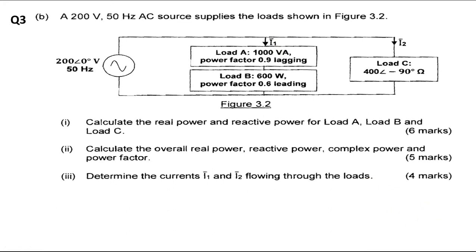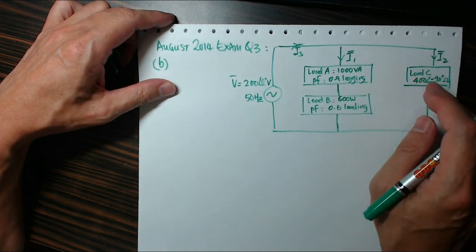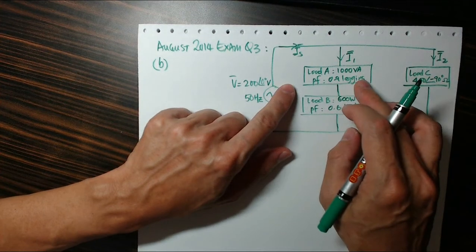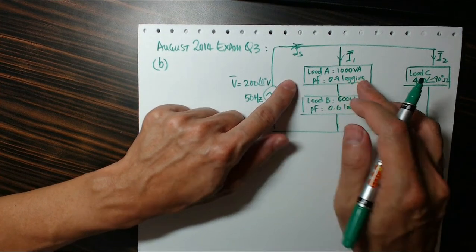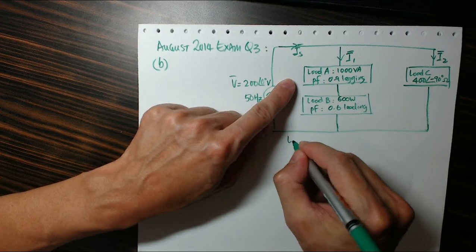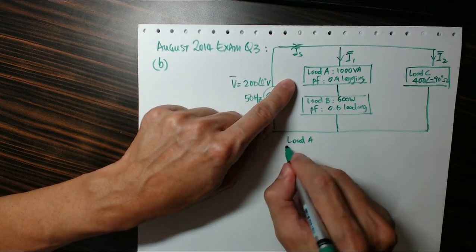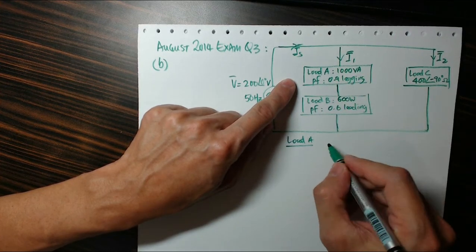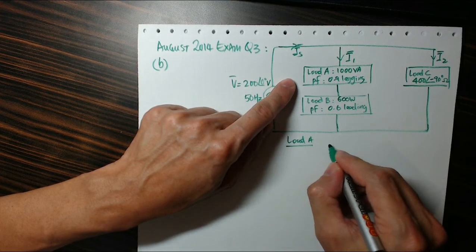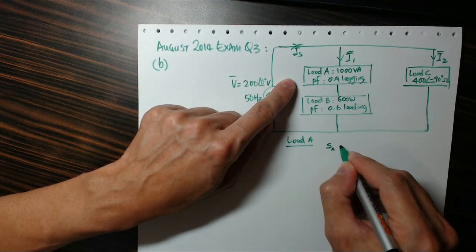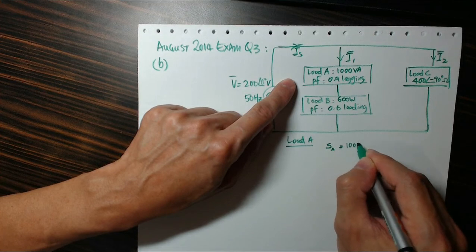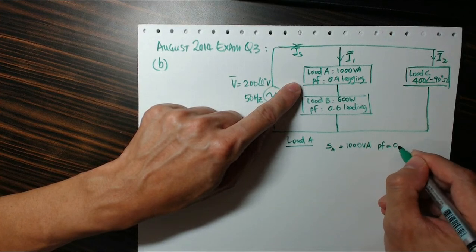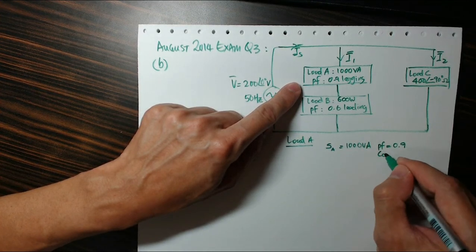Alright, let's see how to answer these questions. Now we can start to answer this question by first looking at each of the load and see how we can derive the real power and the reactive power. You look at load A. Now basically load A, the information given is 1000 VA, the complex or apparent power.